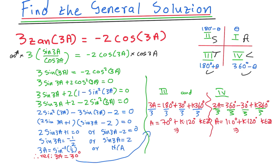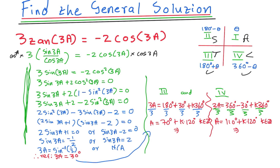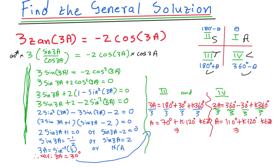General solution is essentially just that — but you need to know how to simplify the equation first. This question required changing tan to sine over cosine and then factorizing a quadratic. I'll do different videos for other types of questions until we cover all the examinable types. This is part one.